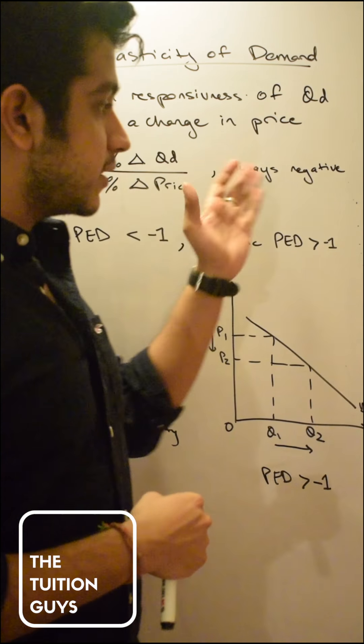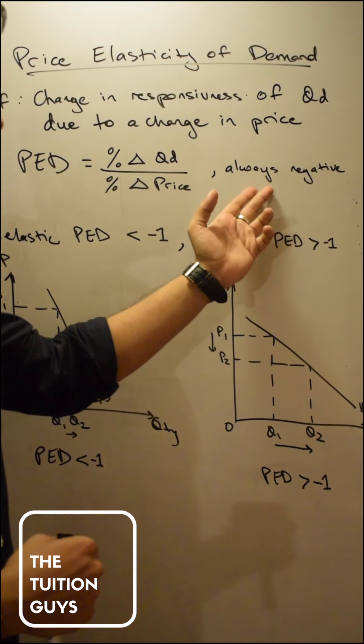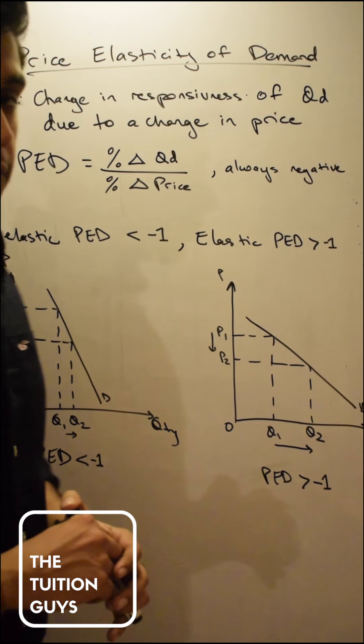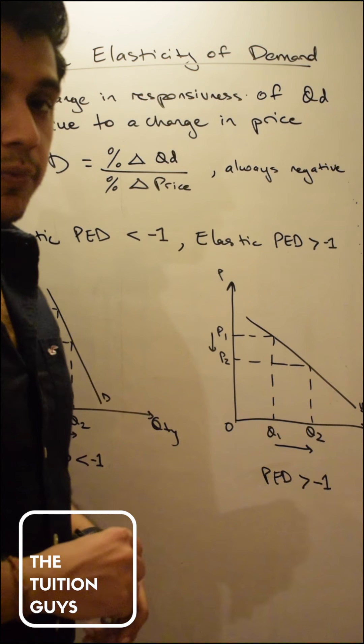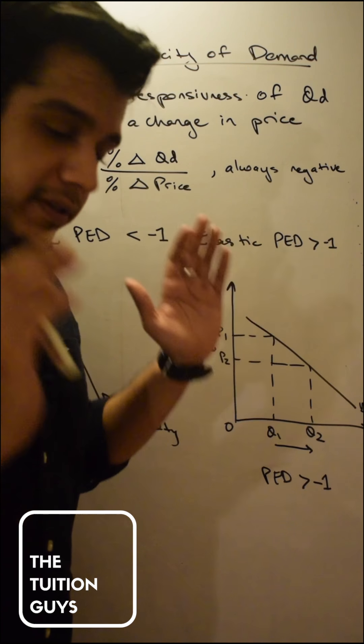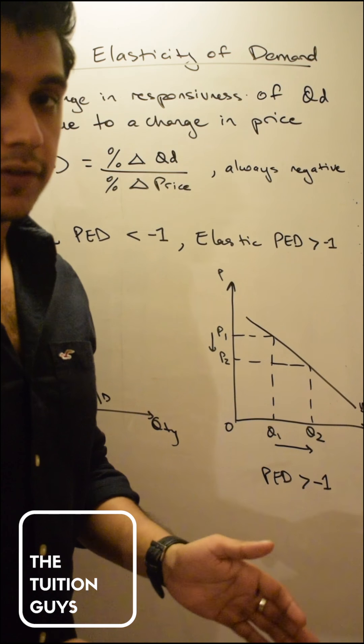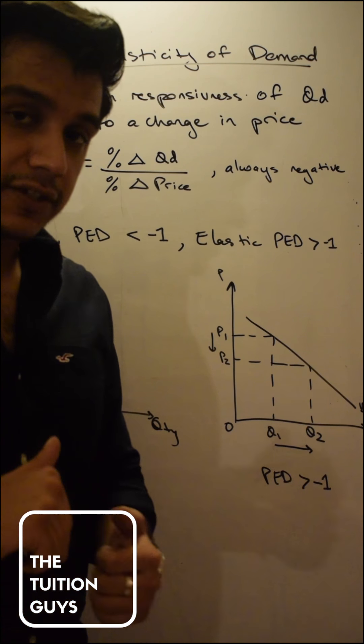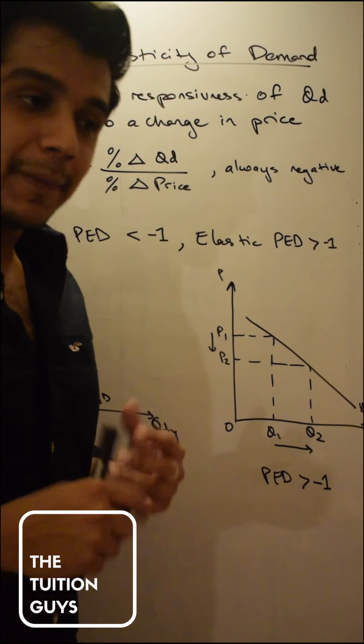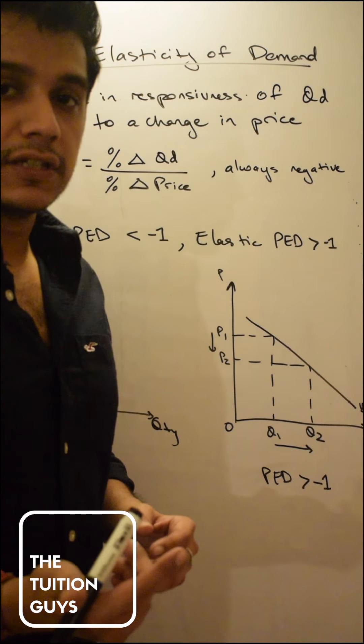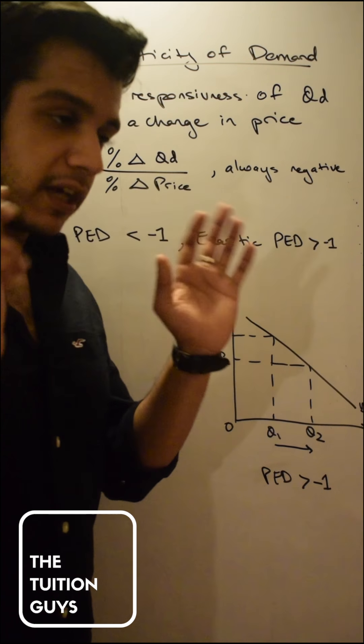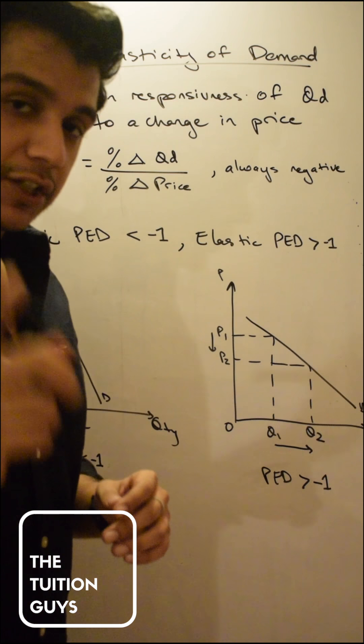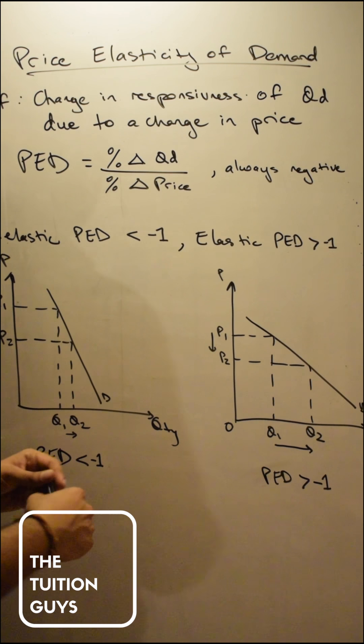So whenever I'm finding the percentage change, always remember that there's going to be a negative sign involved whether that's because of the percentage change in quantity demanded or because of the percentage change in price. The PED will always have a negative sign because of the law of demand. Always remember that because of the inverse relationship in price and quantity there will always be a negative sign. But we don't take that into consideration, remember to put it, but don't get confused by it. If you don't in your calculations have a negative sign then you've done something wrong.